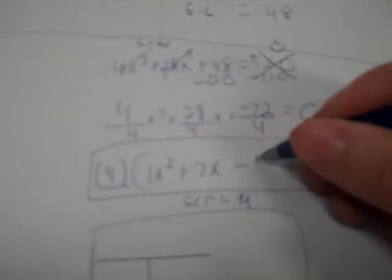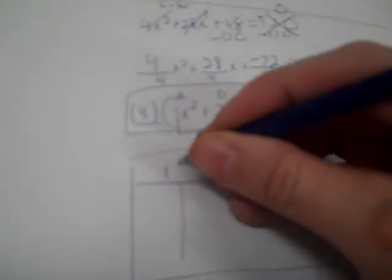So dividing through by 4 gives: 1x² + 7x − 18. Now I take A times C for the box method: 1 times −18 = −18.